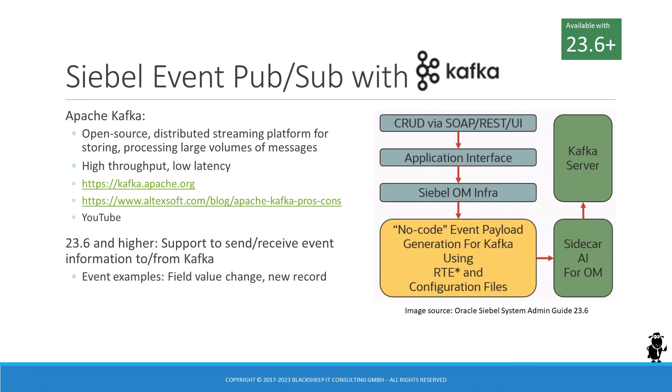Now it's time to talk about what is probably the most exciting feature included in Siebel CRM 23.6 and higher: event publication and subscription with Apache Kafka, also referred to as event pub/sub. Kafka was created around 2011 by engineers at LinkedIn to solve their data integration problems as they moved from a monolithic database to distributed systems. Apache Kafka can be best described as a distributed streaming platform that can receive, store, and route large volumes of messages. If you're new to Apache Kafka, exhaustive information is just a Google search away.